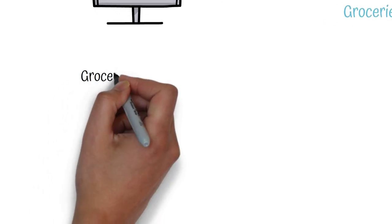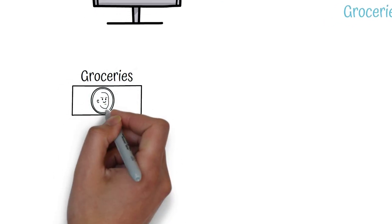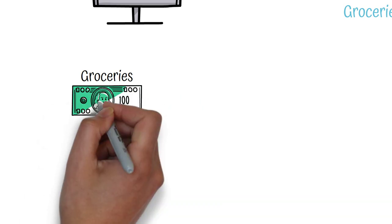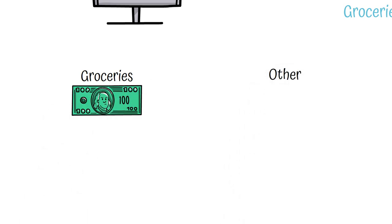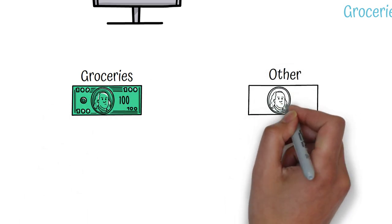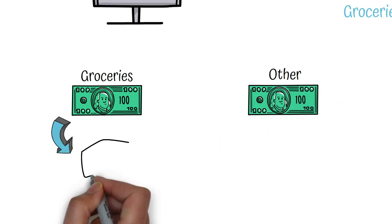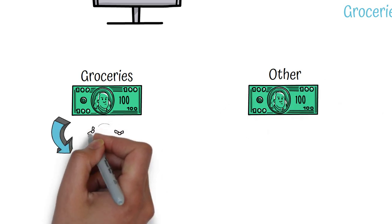For example, let's say you have budgeted $100 for groceries this month. You would take out $100 in cash and put it in an envelope labeled groceries. When you go to the grocery store, you would only use the cash in this envelope to pay for your groceries.